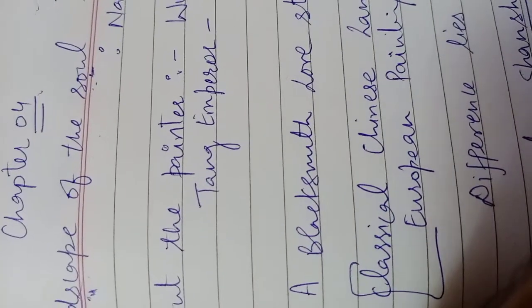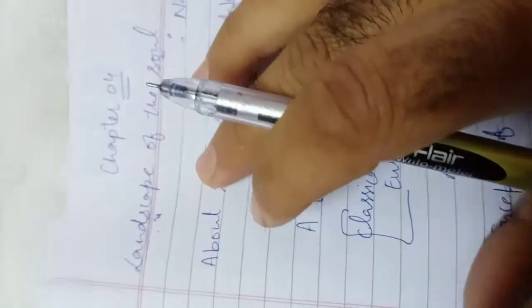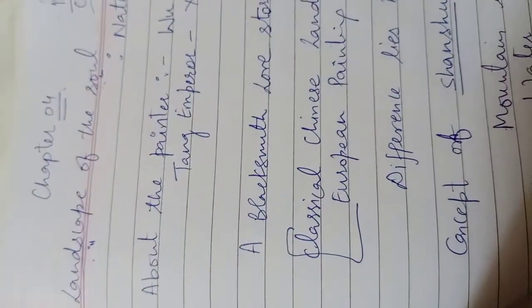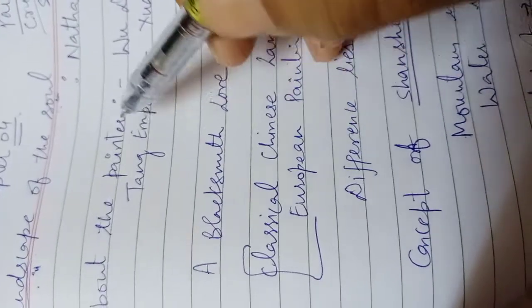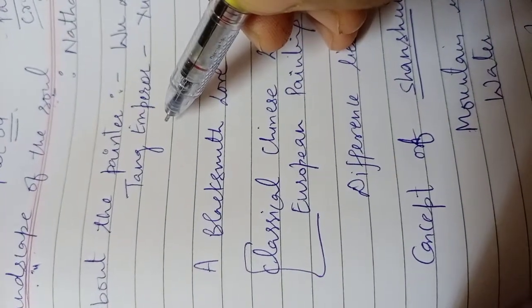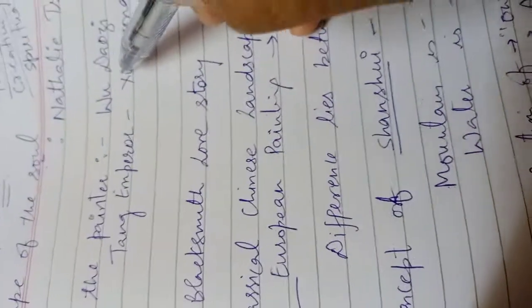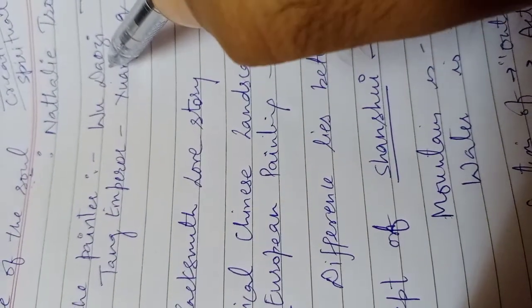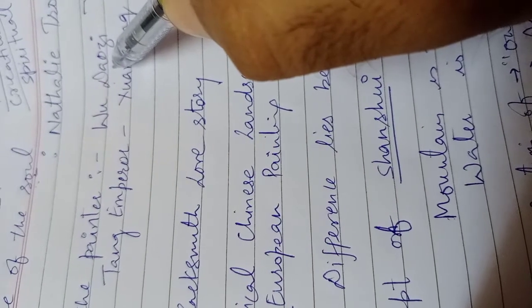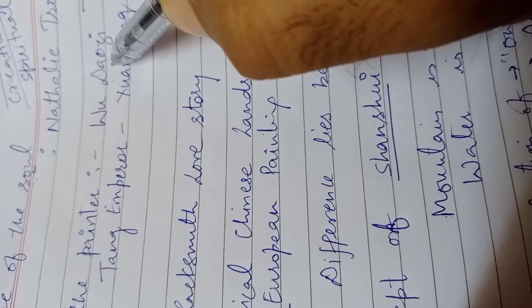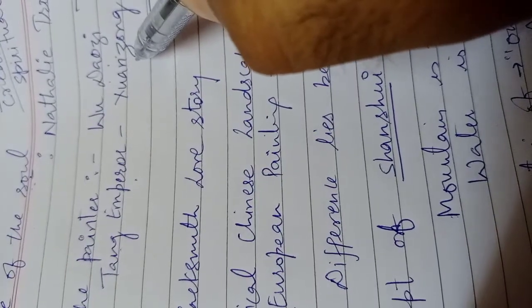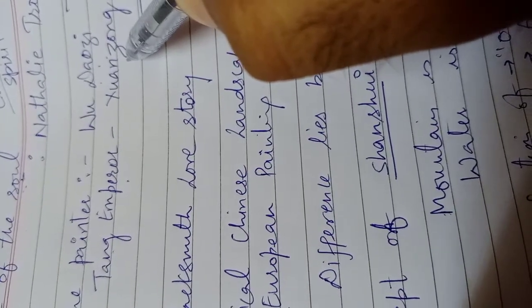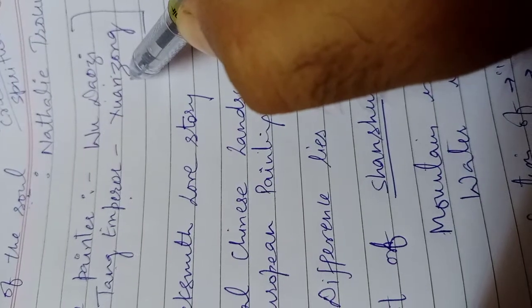Then now come to the content part. What do we have in this one? First thing about the painter. The chapter starts with the Chinese painter, Wu Daozi, and Wu Daozi was a great painter of China and the Emperor means Tang Emperor Xuanzong ordered him to make a painting to decorate his palace wall.